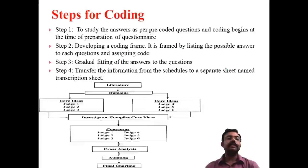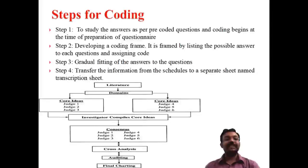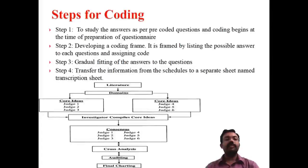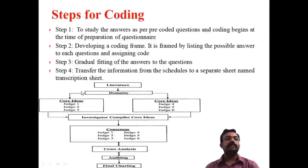The second step is developing the coding frame — determining which categories are used, for example how many categories for age, education, and gender. The third step is gradual fitting of the answers, meaning connecting the codes to the questions. The fourth step is transferring the information from the questionnaire to a separate sheet called the transcription sheet.